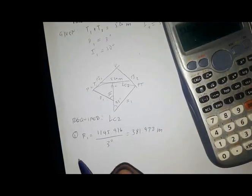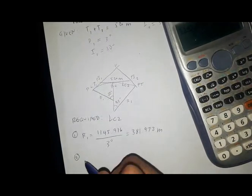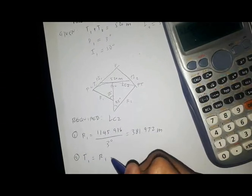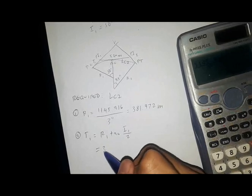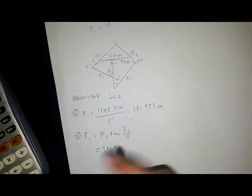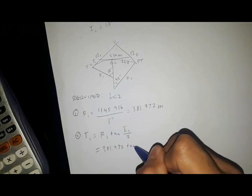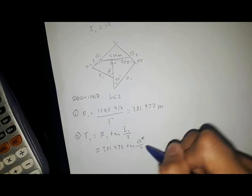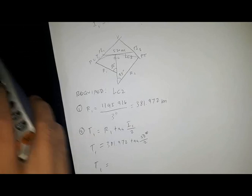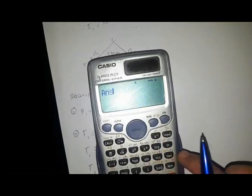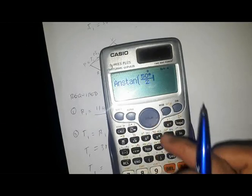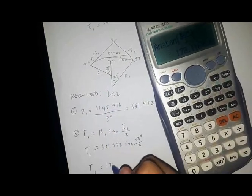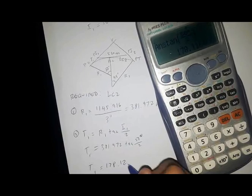After solving for the first radius, we solve for T1, which is equal to R1 times tangent of I1 over 2. So we have T1 equals 381.922 times tangent of 50 degrees over 2, giving T1 equals 178.12 meters.